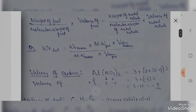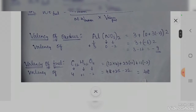Now we calculate the valency of the oxidizer, aluminum nitrate. The valency of aluminum is +3, valency of nitrogen is 0, and oxygen is −2 multiplied by 2 (for three nitrate groups). So: 3 + 0 + (−2 × 2 × 3) gives a total valency of −9. We neglect the negative sign and use the valency of the oxidizer as 9.